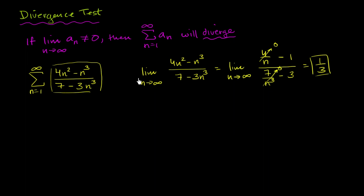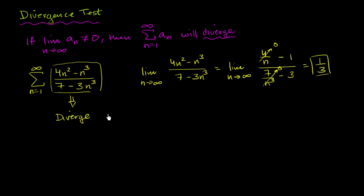So notice the limit of a sub n as n approaches infinity, in this case, is not equal to zero. Therefore this infinite series will diverge.